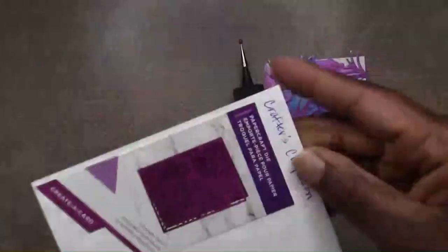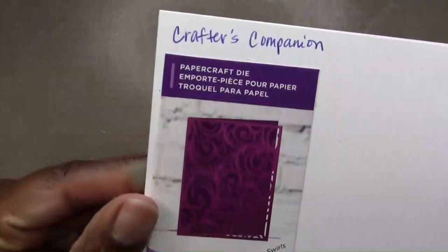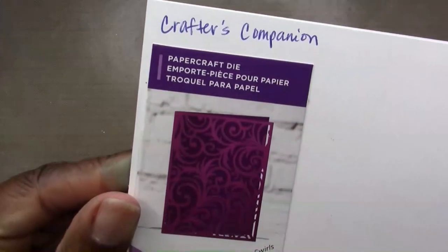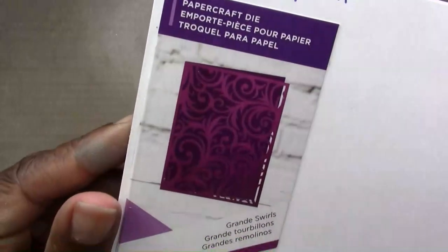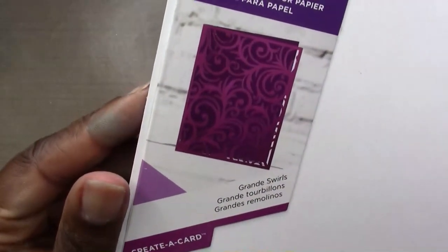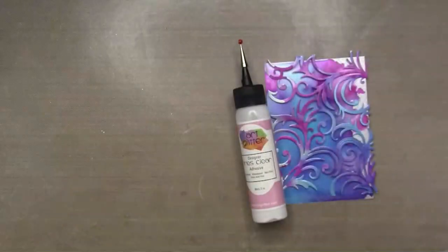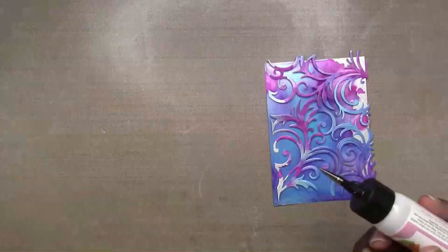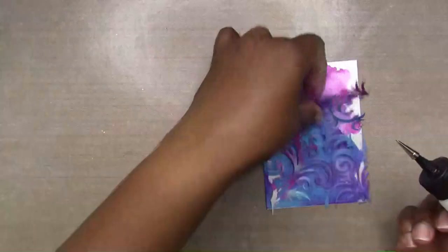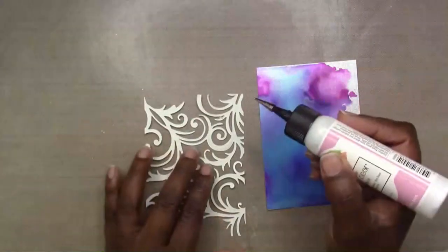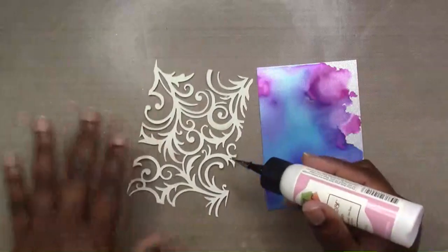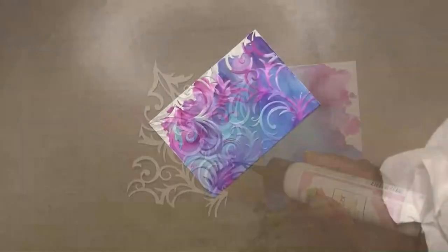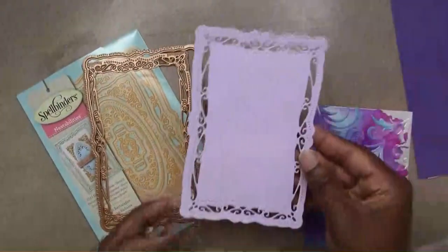Spellbinders die, and it's going to be the Radiant Rectangles. I really love this because you can cut out the inside of the Grand Swirls, or you can cut it out as a whole panel with borders. I just wanted to add this to this panel to add some texture and a little bit of dimension.